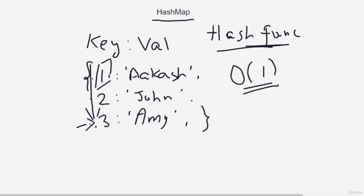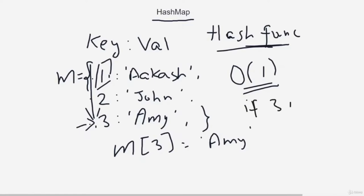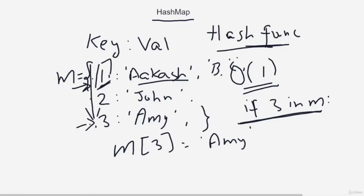If I want to search, I can write 'if 3 in m' — this runs in O(1). Lookup time depends on load and collision — basically the number of entries. If for one key I have multiple values, that increases the time, but overall searching for a key in a hash map is much faster than in an array or linked list. One thing to know is that keys are not sorted in a hash map — they can be in random order.